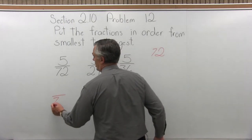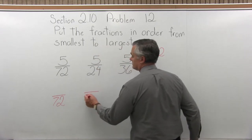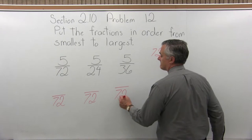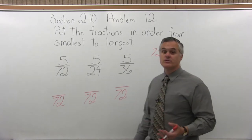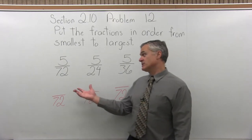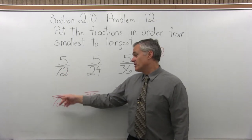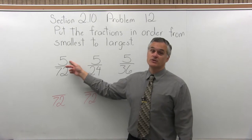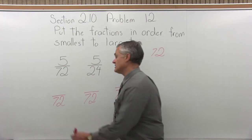So let's make all the denominators 72, and then figure out what the numerators would have to be in order to make equivalent fractions. The first one's easy. If the denominator got to stay the same, it was 72, it stays 72. The numerator also gets to stay the same. If it was 5, it can just stay 5.